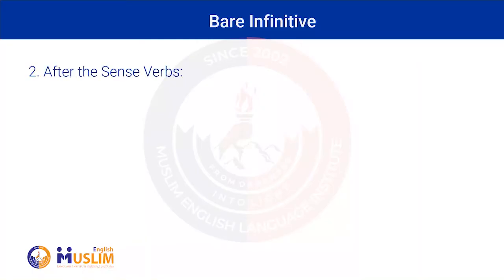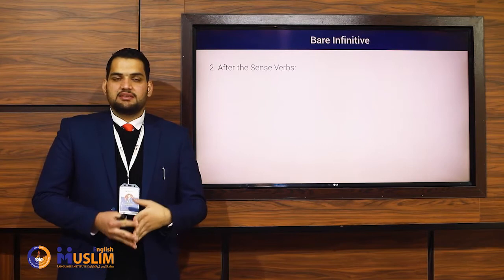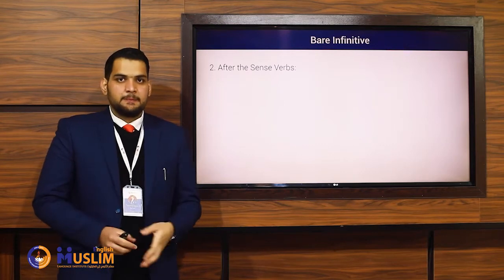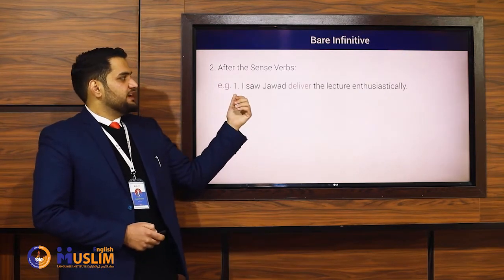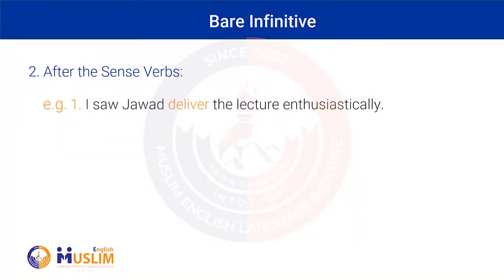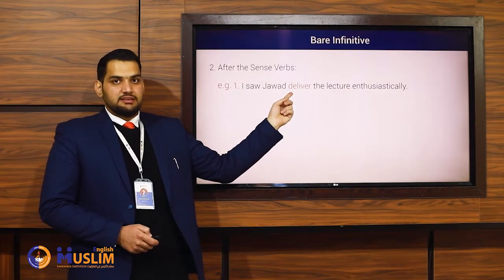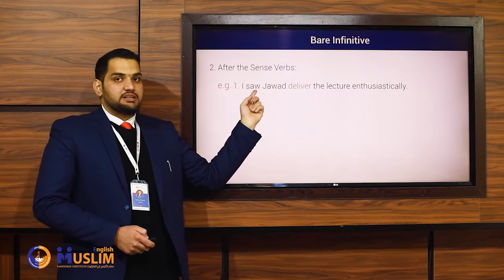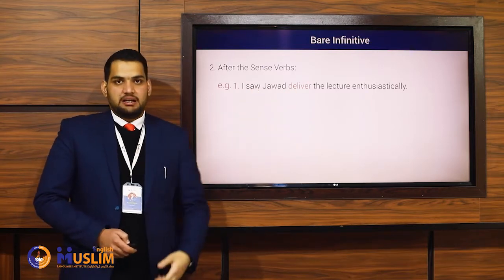The second use is after the sense verbs. A sense verb is a verb that is used to show our senses. For example, 'saw' is a sense verb. 'I saw Jawa deliver the lecture enthusiastically.' In this sentence, the base form of the verb is 'deliver' and it is used after a sense verb, so we can also call this bare infinitive.